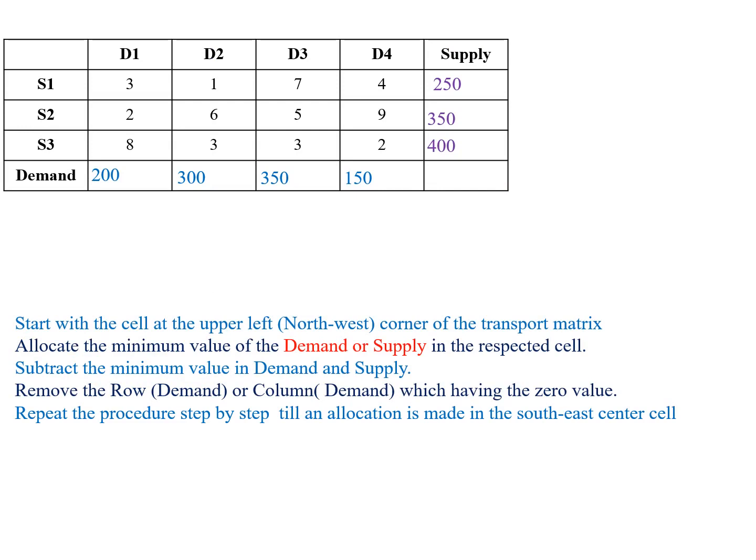Next, we have to find the initial basic feasible solution by the North-West Corner Rule method. The procedure is: first, start with the cell at the upper-left corner of the transportation matrix. Allocate the minimum value of demand or supply in that cell. Then subtract the minimum value from both demand and supply. Remove the row or column which has zero value. Repeat the same procedure step by step till an allocation is made in the south-east corner cell.